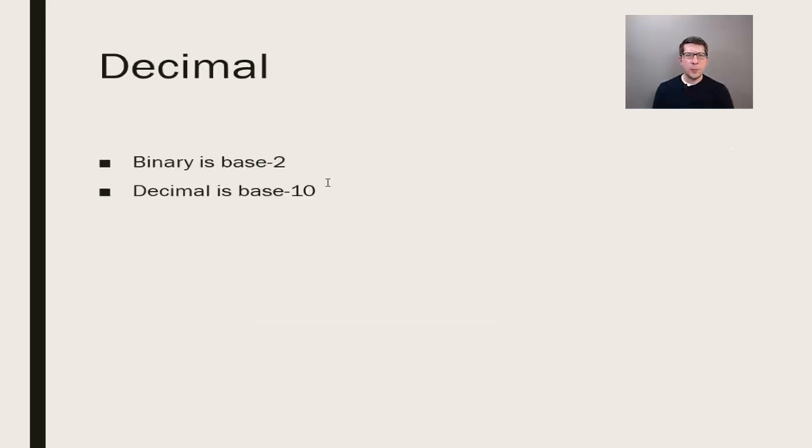To understand binary, or base-2, let's break down decimal, base-10. Consider the number 1308. This has four decimal digits. We'll rewrite this number so that you can see base-10 in action.